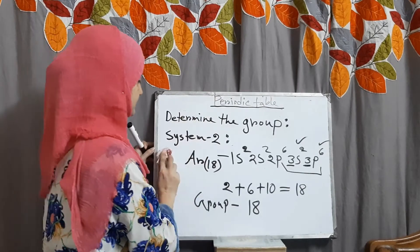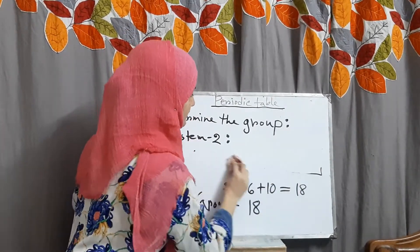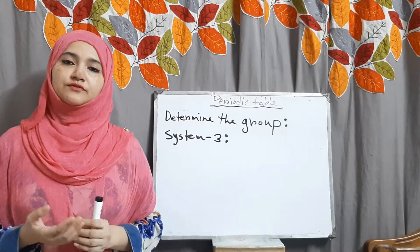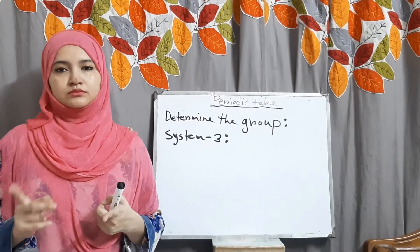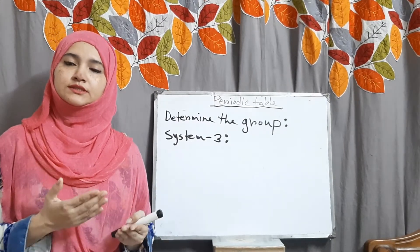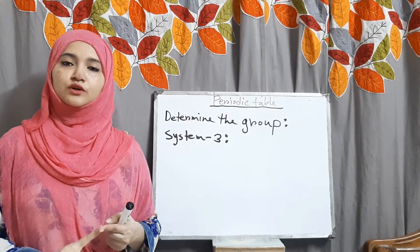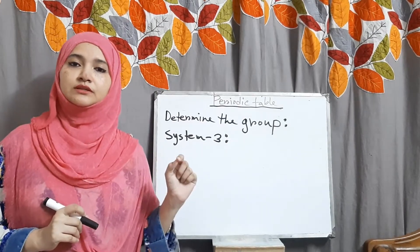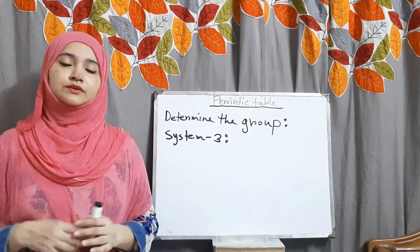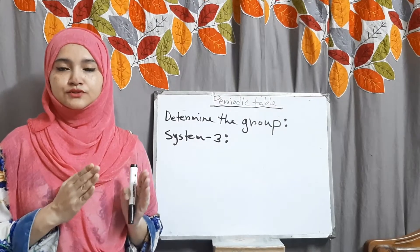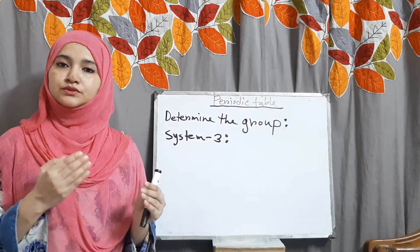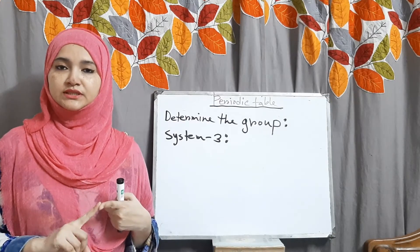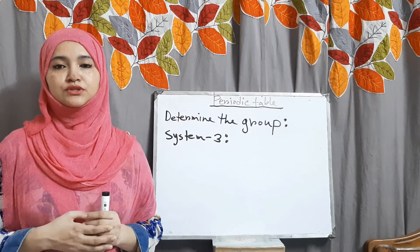Now we go to System 3. System 3 says that if the outermost energy level has only S orbital in its electronic configuration, but before the last S orbital there is a D orbital of the inner shell that contains electrons, then we count the total electron number in the last S orbital and add the electron number present in the inner D orbital to find the group number of that element.